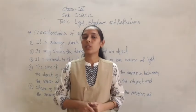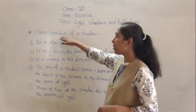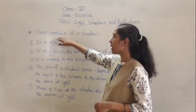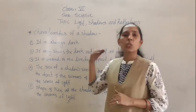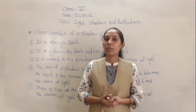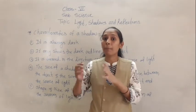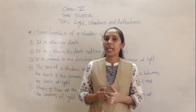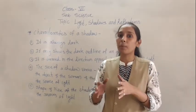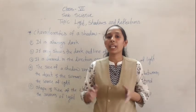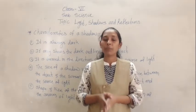So now in today's session we are going to move further to discuss about the characteristics of a shadow. So what is meant by the shadow? The shadow is a dark patch that forms when light rays are stopped or blocked by an opaque material.